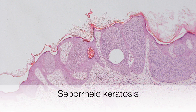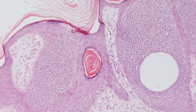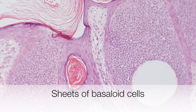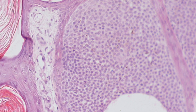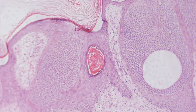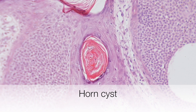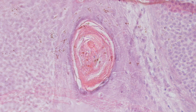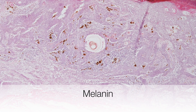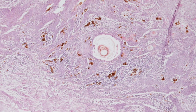Here is a low power view of a seborrhoeic keratosis. On higher power, the basaloid cells become evident. And here is a horn cyst. And in this area, you can see melanin pigmentation in the seborrhoeic keratosis.